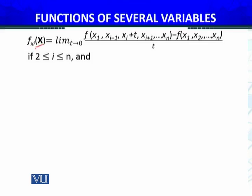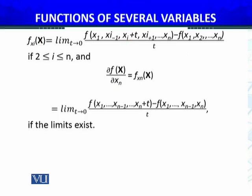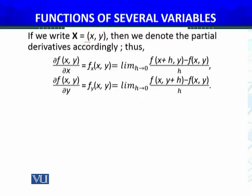At a particular point x = x₀, the partial derivative ∂f/∂xᵢ is defined as the limit as t → 0 of [f(x₁, ..., xᵢ + t, ..., xₙ) − f(x₁, ..., xₙ)] / t. For the 2D case, x = (x, y), we denote the partial derivatives accordingly as ∂f/∂x and ∂f/∂y. These partial derivatives are limits of functions which can be treated as functions of one variable.